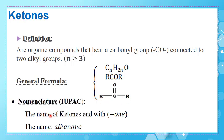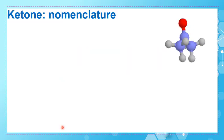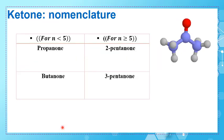Regarding their name, the name of ketones ends with the suffix -one, so they are named alkanone. 'Alkan' changes according to the length of the carbon chain. Let's look at some examples of ketone nomenclature.